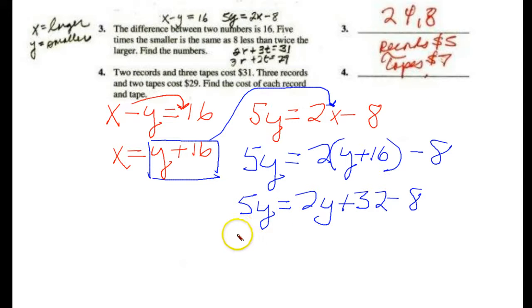5y equals 2y plus 32 minus 8. So combine like terms here. 5y equals 2y plus, now I'm going to subtract 8 from there, and I get 24. I'm going to transpose 2y to the other side, or subtract 2y from here, 2y from there, and I then get 3y equals 24. Divide both sides by 3. This will become a y, and this becomes an 8.